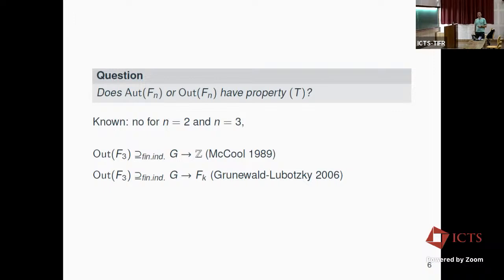For low indices Property T was known not to hold. For n=2 this follows from the surjection to GL(2,Z). For Out(F3), there are surjections of finite-index subgroups onto Z and onto free groups, by McCullough and later by Grunewald–Lubotzky, so Out(F3) and Aut(F3) cannot have Property T.